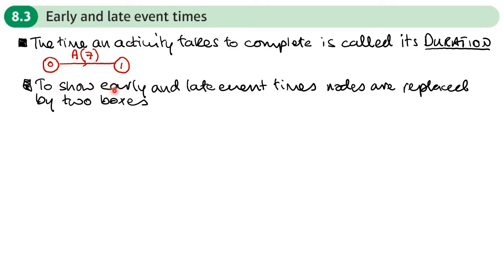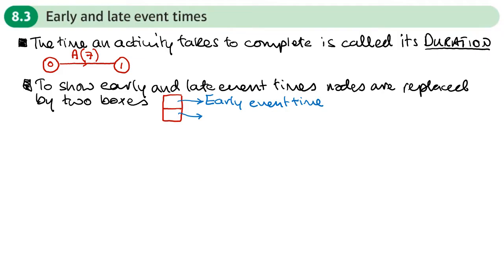To show these early and late event times, nodes in the activity network are replaced by two boxes. What you'll see on an activity network are two stacked boxes. The top box will contain a number we call the early event time, and the bottom box will contain a number we call the late event time.